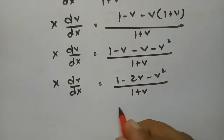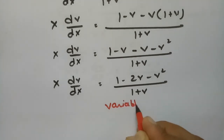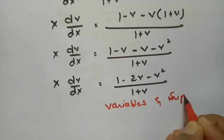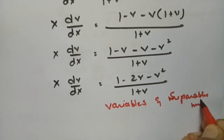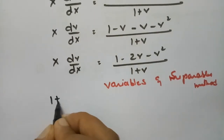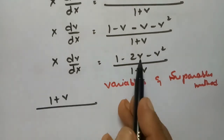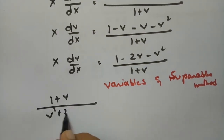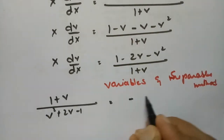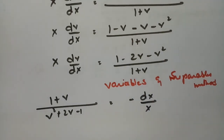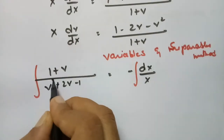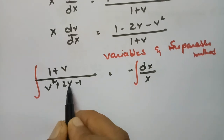Now we use the variables separable method. Separating variables: (1 + v)/(v² + 2v - 1) dv = -dX/X. Integrating both sides: for the left side, since the derivative of v² + 2v - 1 is 2v + 2, we multiply and divide by 2.